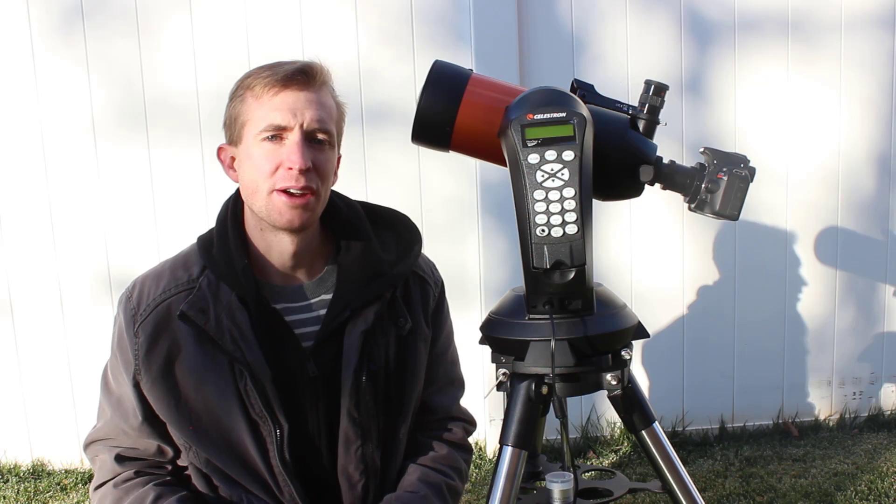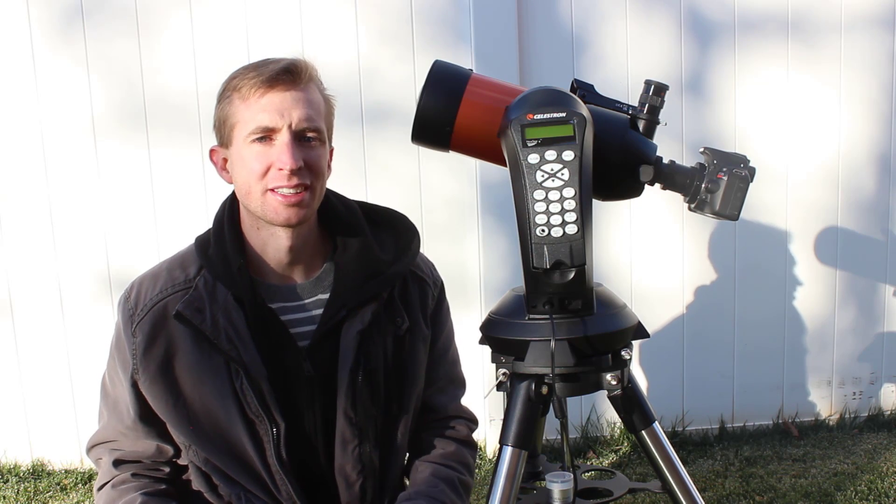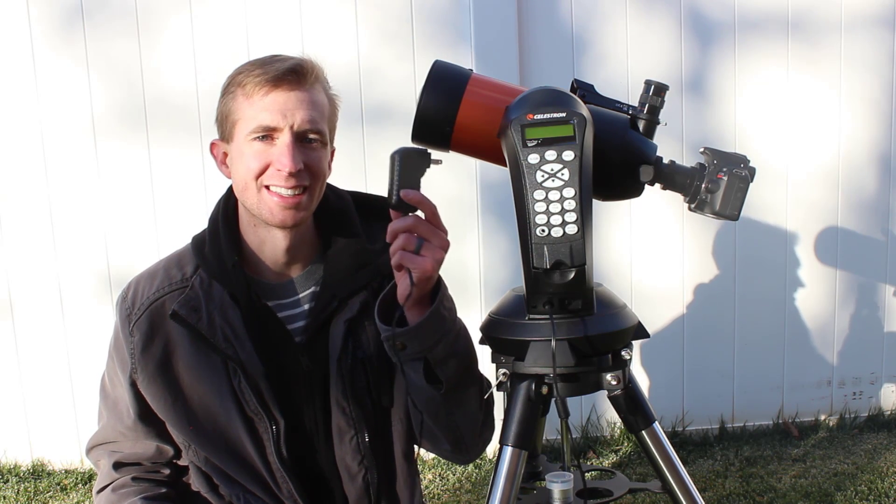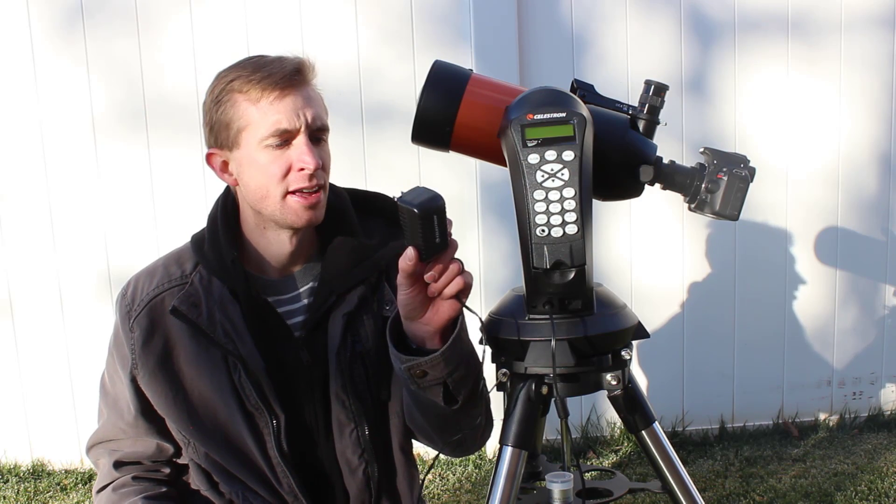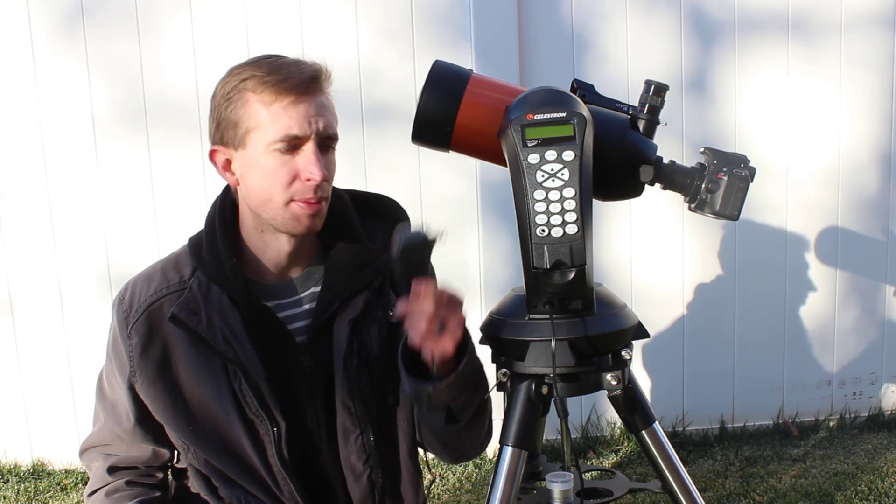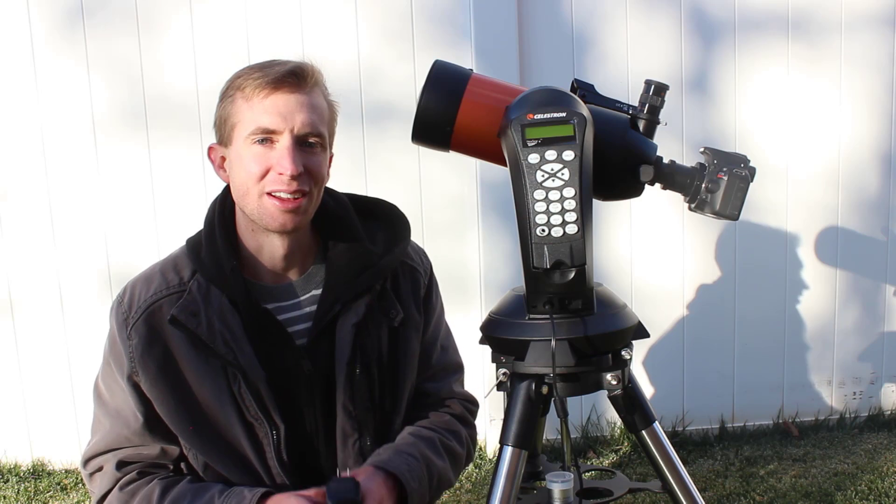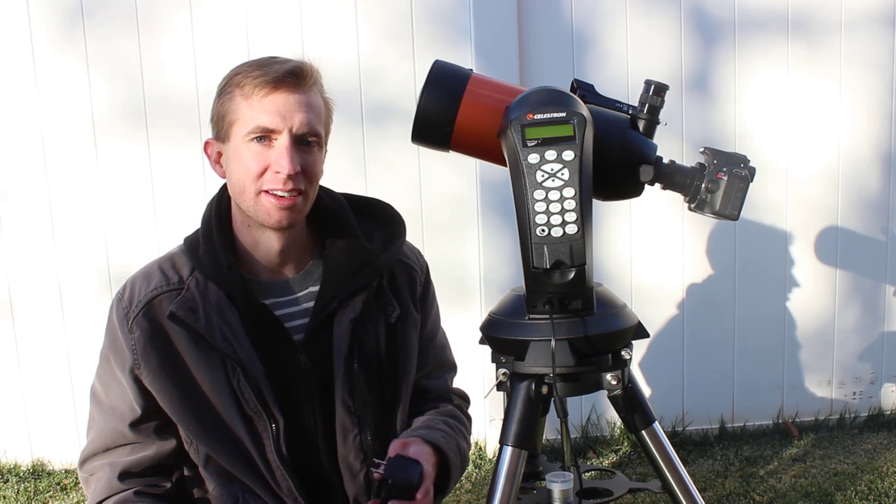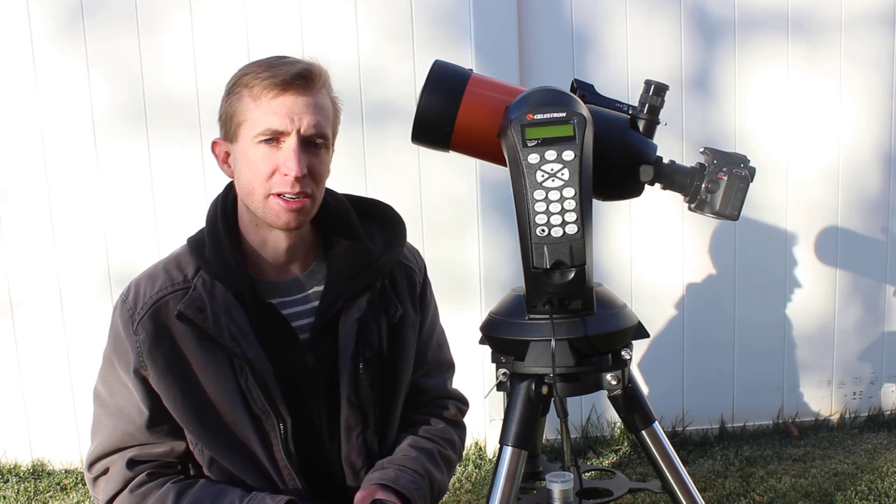If you don't have an external lithium battery and you observe at home a lot, one accessory I would definitely pick up is just a standard Celestron AC adapter. This has a 2 amp output and will obviously allow you to keep your telescope powered indefinitely so you don't have to worry about any power issues when you're at home.